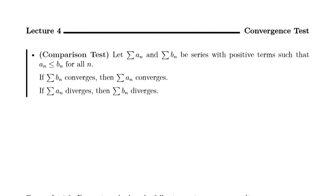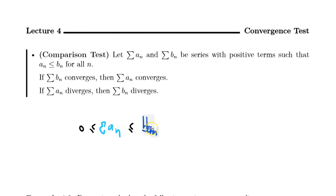The next test we're going to talk about is called the comparison test, and the idea is actually pretty simple. If we have two series, a_n and b_n, such that a_n is always less than or equal to b_n, and both are positive, then the sum of a_n should be less than or equal to the sum of b_n as well.